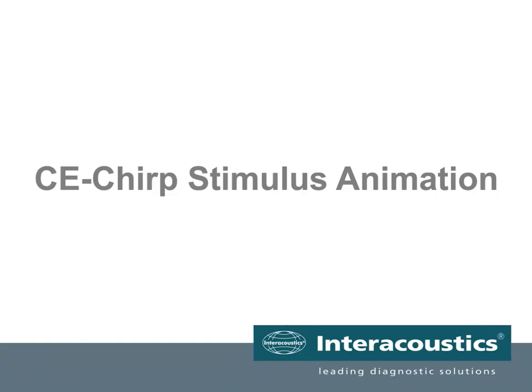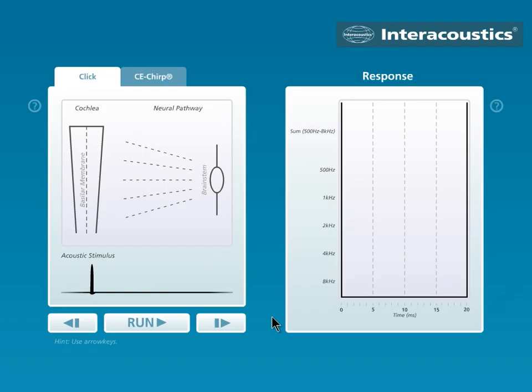Here comes an animation of the CE chirp stimulus to show you how it actually works in the ear and in the auditory neural pathway. In this animation, we have on this side our cochlea with the basilar membrane, and then we have the neural system or part of the neural system that leads to the brainstem. And we have the acoustic stimulus down here that we can put into the cochlea.